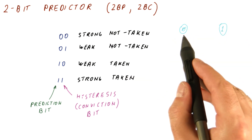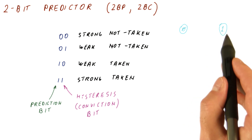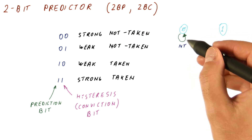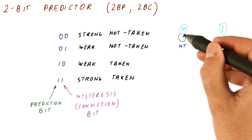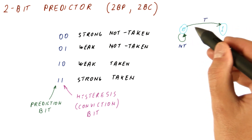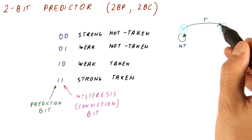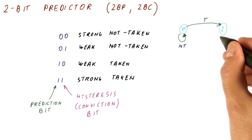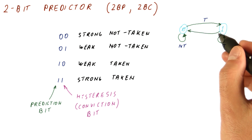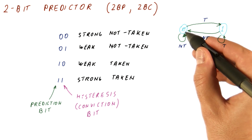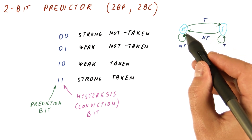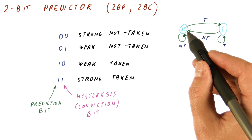The one-bit predictor only had the not-taken and the taken state. If our state is 0, we predict not taken. If we see not taken, we stay. If, however, we are predicting not taken but the decision turns out to be taken, we change our mind and move to the taken state. In the taken state, we stay if the branch is indeed taken, but if we predict taken and see not taken, we go back. One outcome changes our mind completely, resulting in two mispredictions per anomaly.